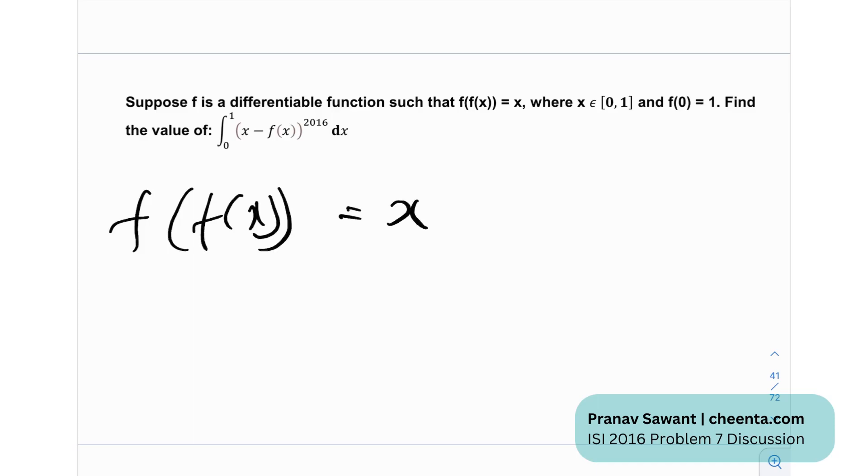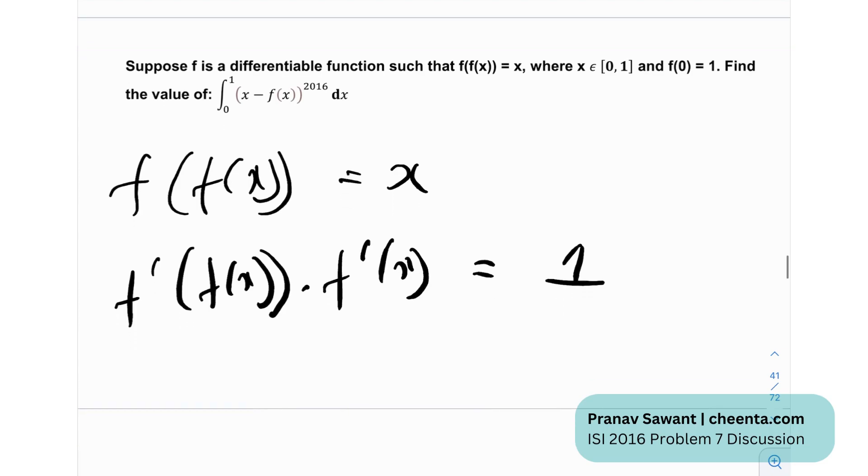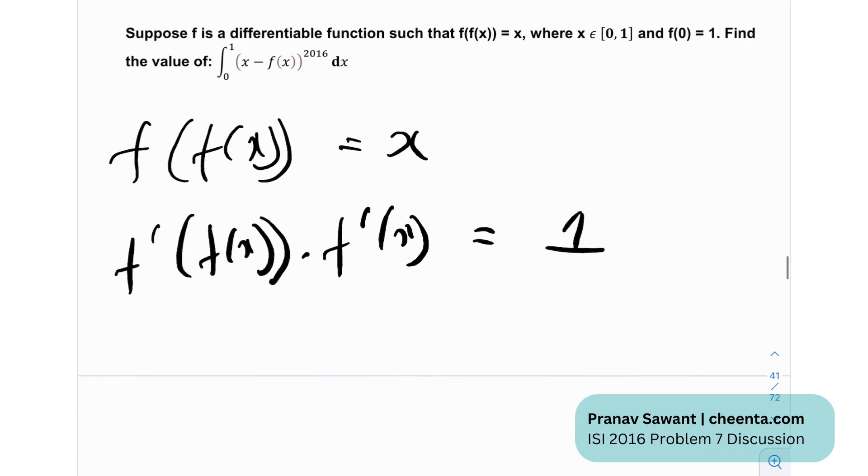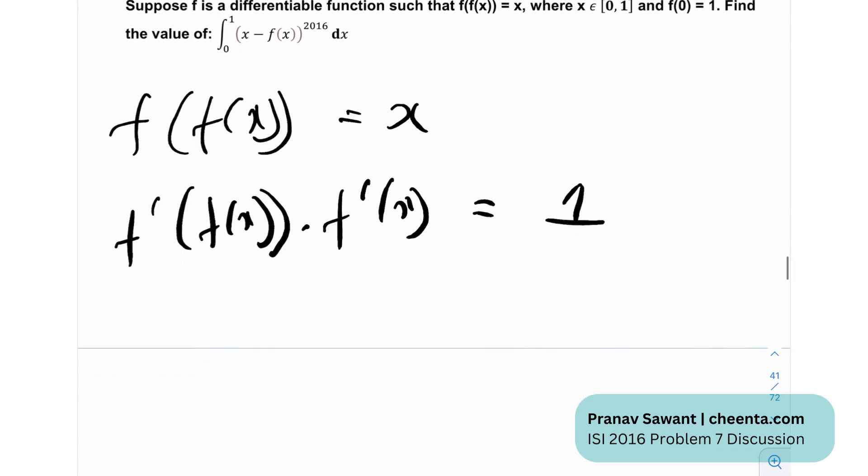If I just compute the derivative on both sides, I'll get something like this: f'(f(x))·f'(x) = 1, and this is essentially nothing but the chain rule. You find out the derivative of the outer function and the derivative of the inner function.